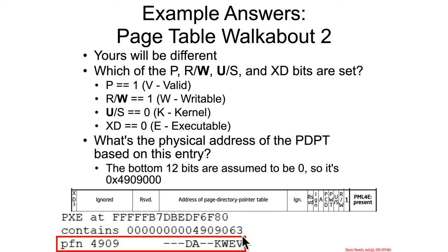For my page map level 4 entry, I can see that bit 0 is set. This is 3, so that would be 0, 0, 1, 1. So the present bit is set.